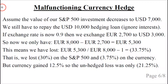Now let's look at an example where the currency hedge malfunctions. Recall that we had invested 10,000 US dollars in the S&P 500, and let's say that value decreases to 7,000 US dollars — a decrease of minus 30 percent. We still have to repay the 10,000 US dollar hedging loan. In this example we ignore interest rates to isolate how the hedging itself malfunctions. Let's say the exchange rate is now 0.9, up from 0.8 when we made the hedge.